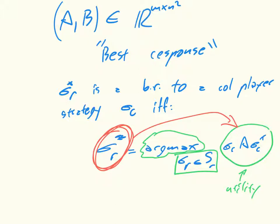So in other words, the best response to sigma c is simply the strategy that, once I put it in here, makes the utility maximal. And we have the equivalent definition for column players.